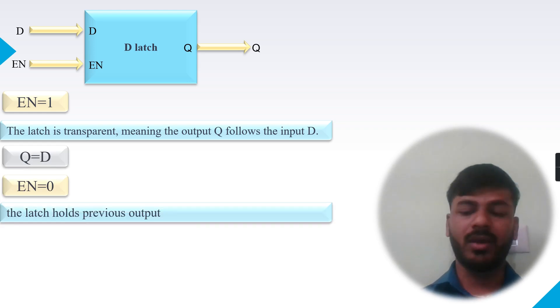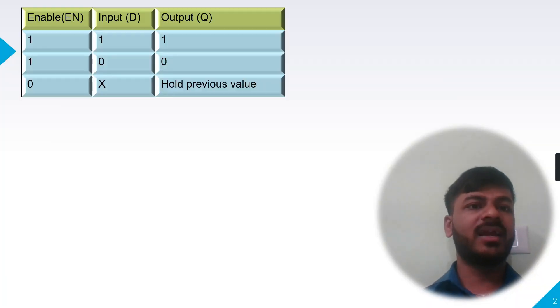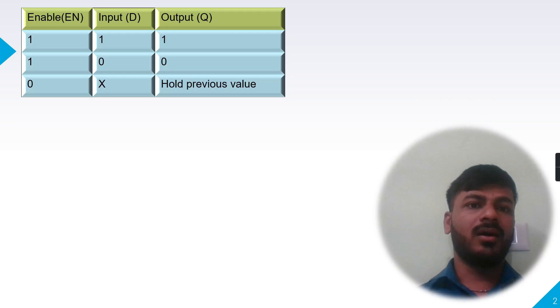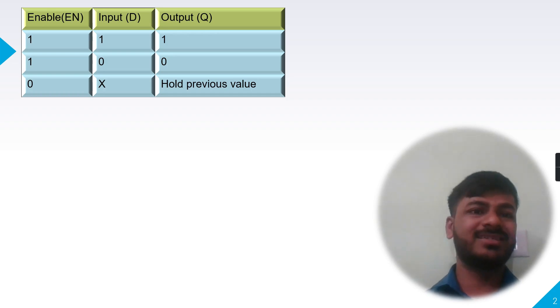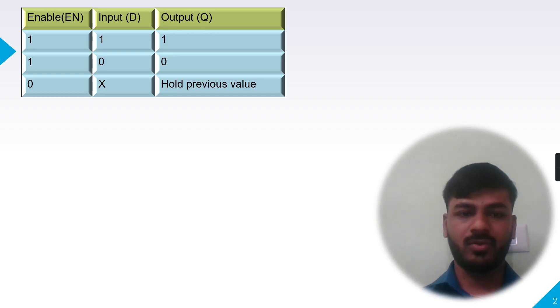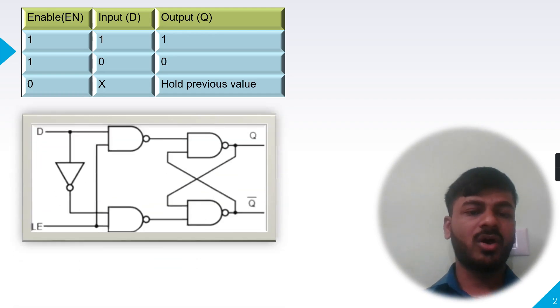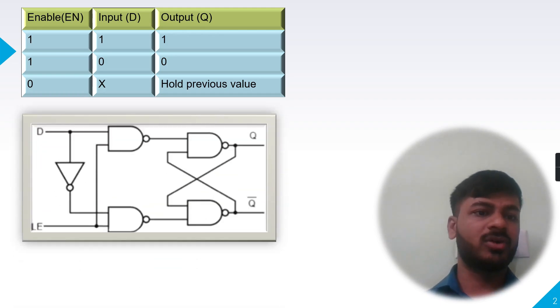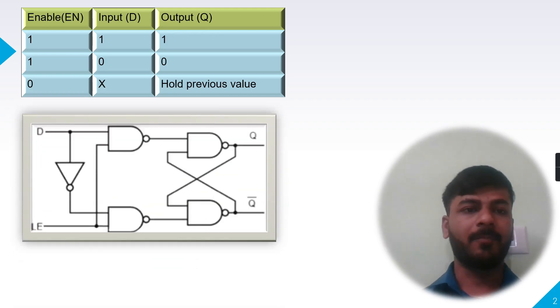Looking at the truth table: when Enable is high, the output holds the current value of input D; when Enable is zero, the output holds the previous value. This is the logic diagram of the positive level sensitive D latch.